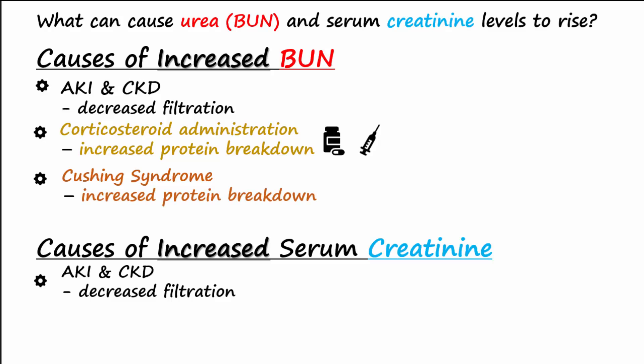A diet high in protein can increase BUN. Two drugs, cimetidine and trimethoprim, can increase serum levels of creatinine.